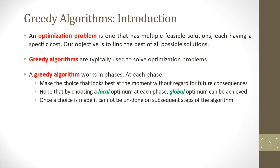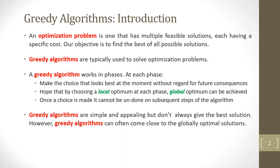A greedy algorithm works in phases. At each phase, it makes a choice that looks best at the moment without regard of any future consequences, hoping that by choosing a local optimum at each phase, a global optimum can be achieved. Once a choice has been made, it cannot be undone on subsequent steps of the algorithm. Greedy algorithms are simple and appealing, but don't always give you the best solution.